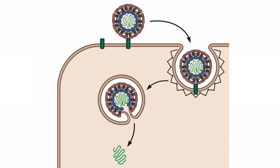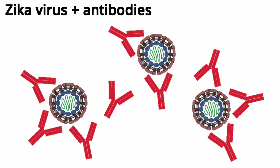When Zika viruses infect cells, the virus first binds to a cell surface receptor protein. The virus particle is then taken into the cell in a membrane vesicle called an endosome. Then the membrane of the virus and the endosome fuse, releasing the viral RNA into the cytoplasm, where it can begin directing the synthesis of new virus particles. Antibodies against viruses, shown in red in this image, bind to virus particles and prevent them from entering cells. This is how some antibodies prevent virus infections.